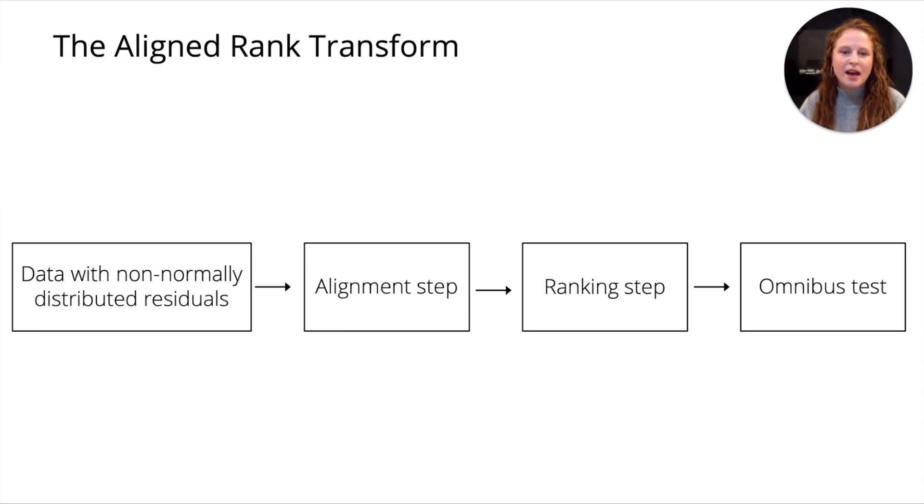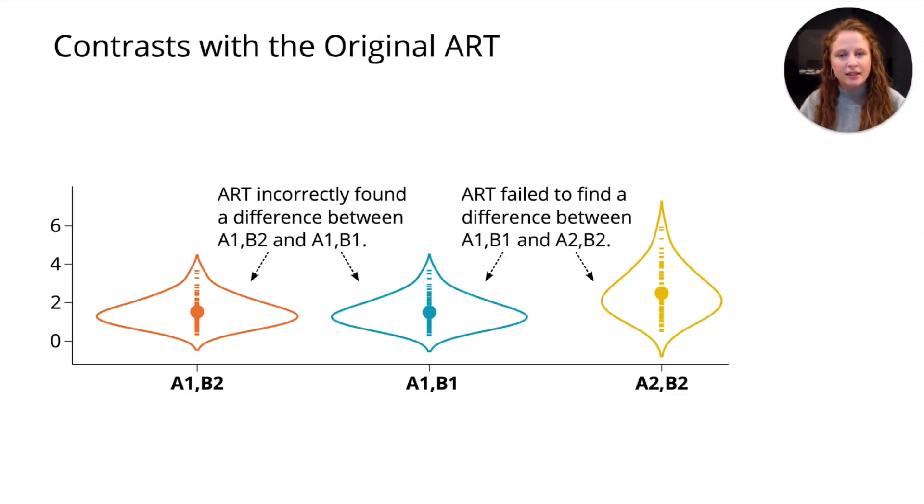The ART has two steps, an alignment step followed by a ranking step. After those two steps, any data can be analyzed with any omnibus test, which includes the ANOVA that we're all so familiar with. The ART works really well for omnibus tests, and it also works well for contrasts between levels of one factor. But it doesn't work well for contrasts between levels of multiple factors. A really important example of a contrast test are post-hoc tests that we conduct all the time.